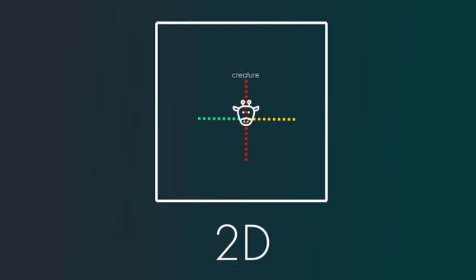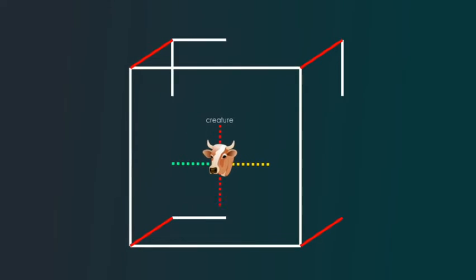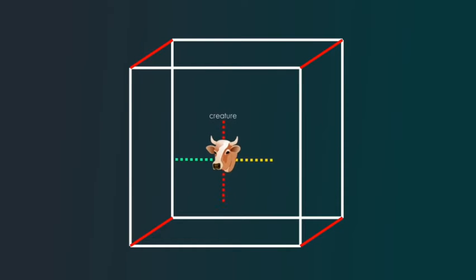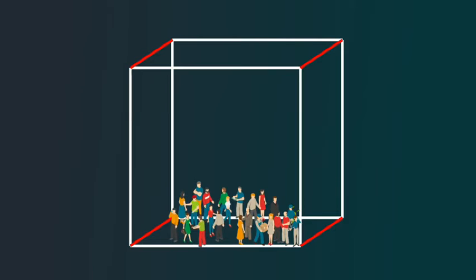To turn the 2D world into a three-dimensional figure, we should draw a line from each corner of the square and connect them. And here we've already created a cube or space in which we exist ourselves.